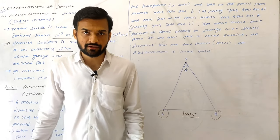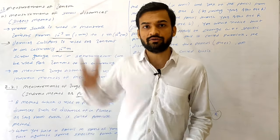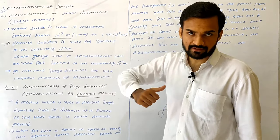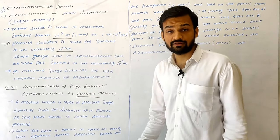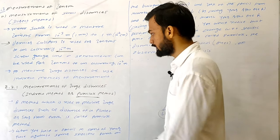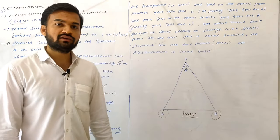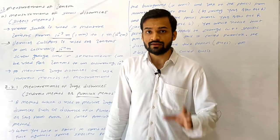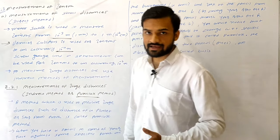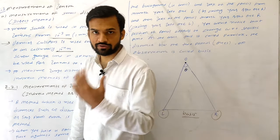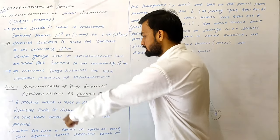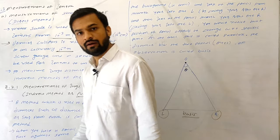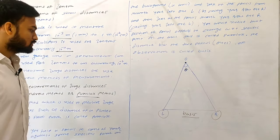Now suppose I need to measure large distances, such as the distance of a planet to Earth, distance of a star to Earth, or distance of the Sun to Earth. We cannot use a meter scale, Vernier calipers, or screw gauge for these. For large distance measurement, we use the parallax method, also known as the indirect method.